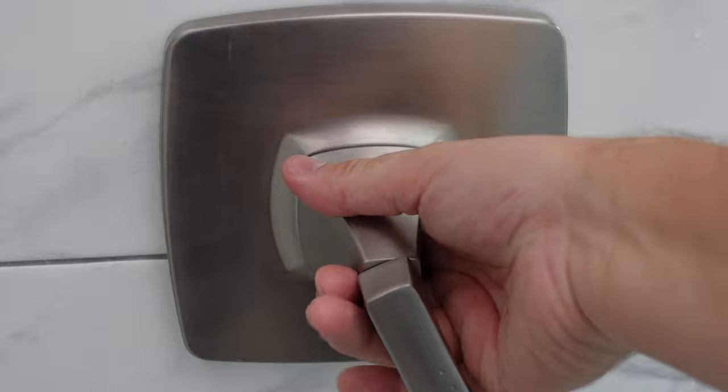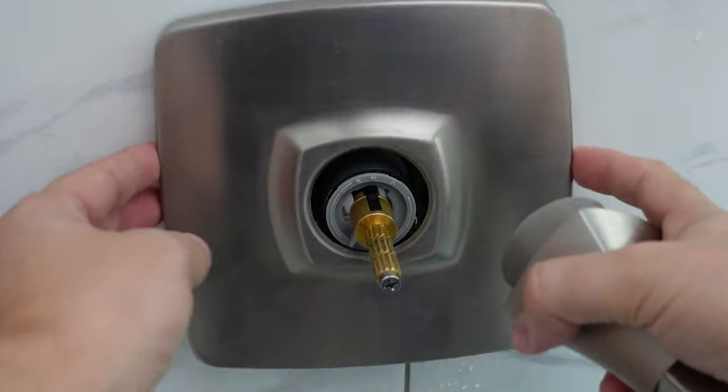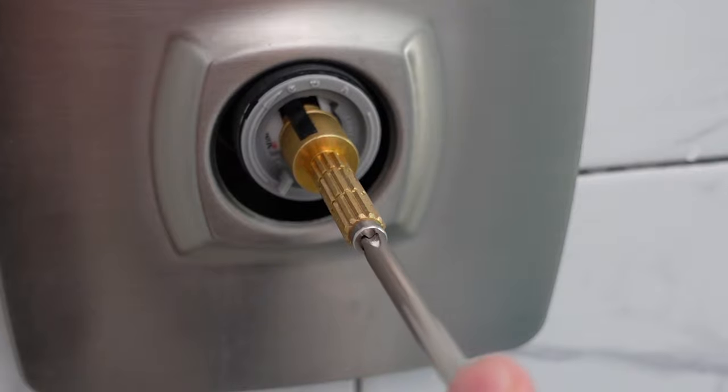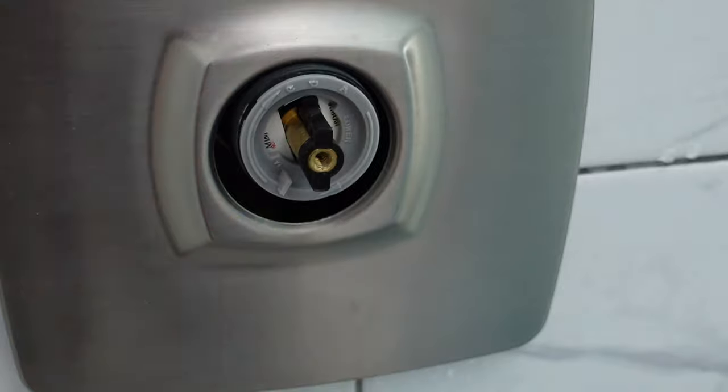Step two, remove the handle of the valve. Mine simply unscrews, but you might have to pop off the cap. Then you have to remove this gold brass piece by removing the screw with a Phillips screwdriver. Again, yours might be set up a little bit different.